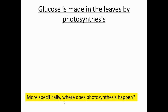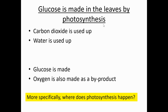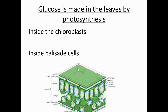Today's lesson is about what happens to the glucose after it's been made, which is why it's also important to know how it's transported around. Glucose is made in the leaves by photosynthesis — carbon dioxide and water are used up, glucose is made, and oxygen is made as a byproduct. The key thing to remember is that glucose is the reason for photosynthesis, and it happens inside the chloroplasts.